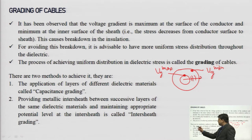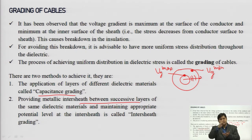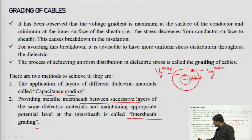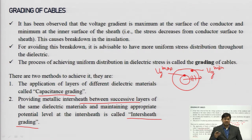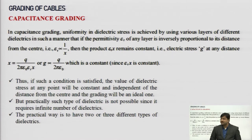The first method is the application of layers of different dielectric materials, called capacitance grading. The second is providing metallic inter-sheaths between successive layers of insulation — instead of a single sheath, multiple sheaths are provided between successive insulation layers. This is called inter-sheath grading.